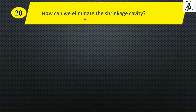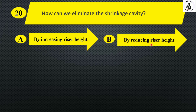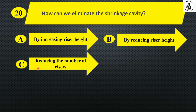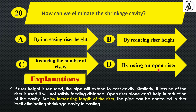Next: how can we eliminate the shrinkage cavity? Option A by increasing riser height, option B by reducing riser height, option C reducing the number of risers, and option D by using an open riser. If the riser height is reduced, the pipe will extend into the cast cavity. If fewer risers are used, it won't satisfy the feeding distance. An open riser alone cannot reduce the cavity. But by increasing the riser height, the pipe can be controlled within the riser itself, eliminating the shrinkage cavity. So the right answer is option A, by increasing riser height.